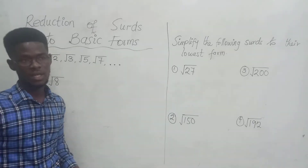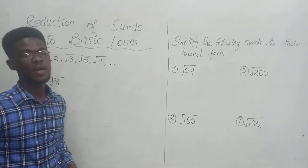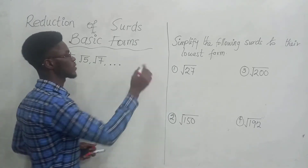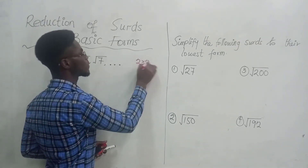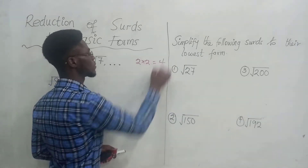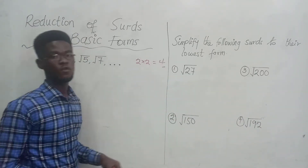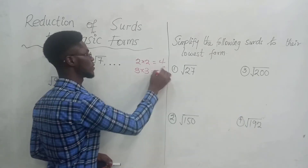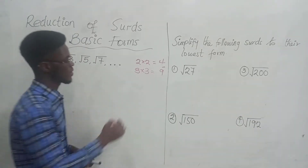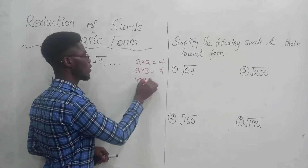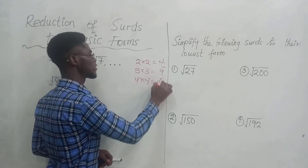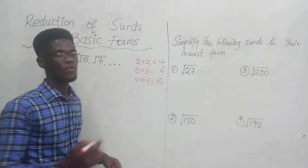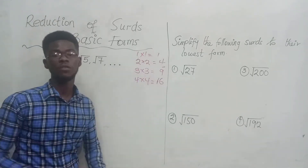A perfect square is simply any number that can be obtained by multiplying a number by itself. For example, if I pick 2 and multiply by 2, I get 4. So 4 is a perfect square. Similarly, 16 is also a perfect square. And don't forget, 1 times 1 is also a perfect square.